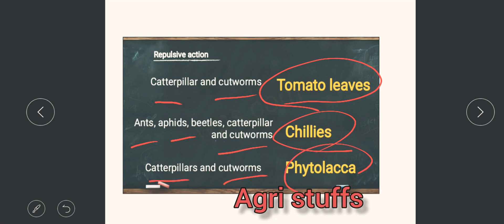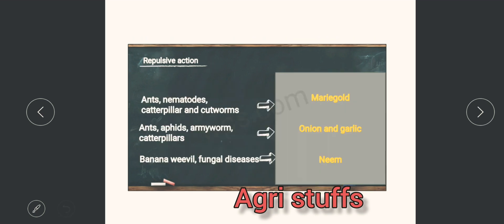Caterpillars and cutworms are controlled by phytolacca. Ants, nematodes, caterpillar and cutworms are controlled by marigold. Ants, aphids, armyworm, caterpillar are controlled by onion and garlic.